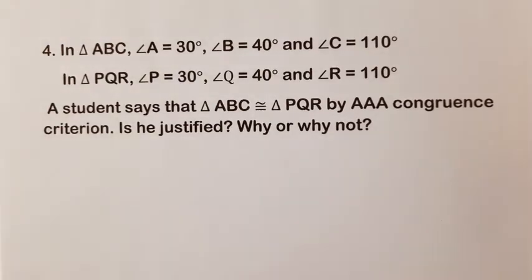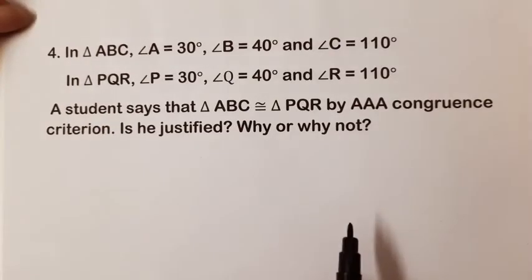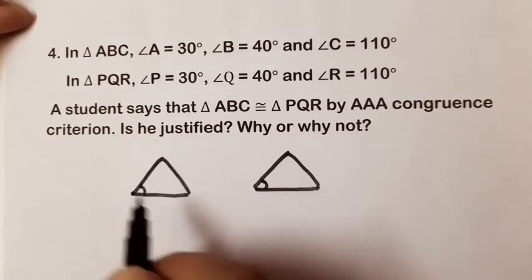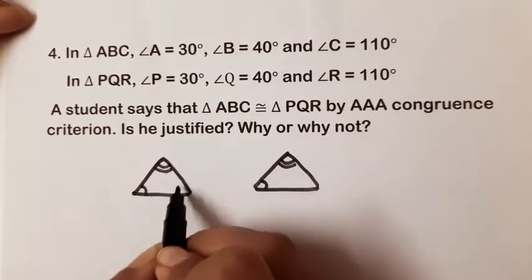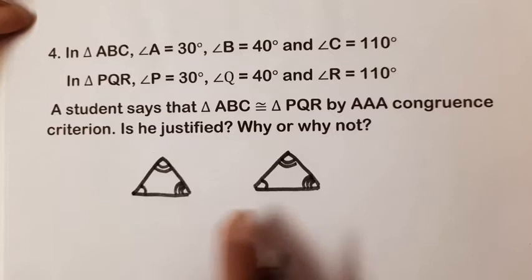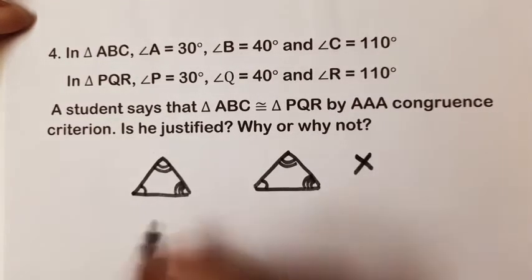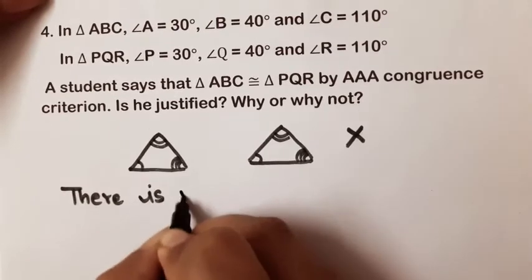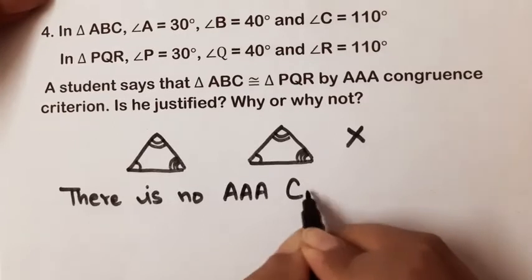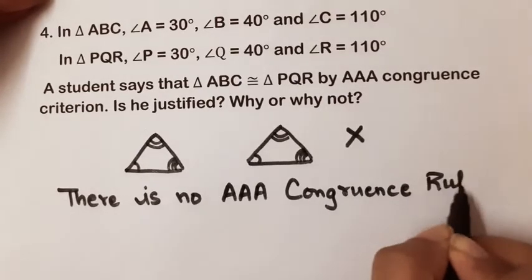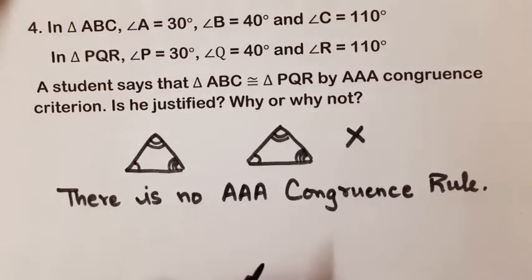When we talked about the congruence criteria, we never talked about the condition related to three angles — that if three angles of one triangle are equal to the three angles of another triangle, the triangles are congruent. There is no such condition; there is no AAA congruence criteria. So when the student said this, it was not justified.